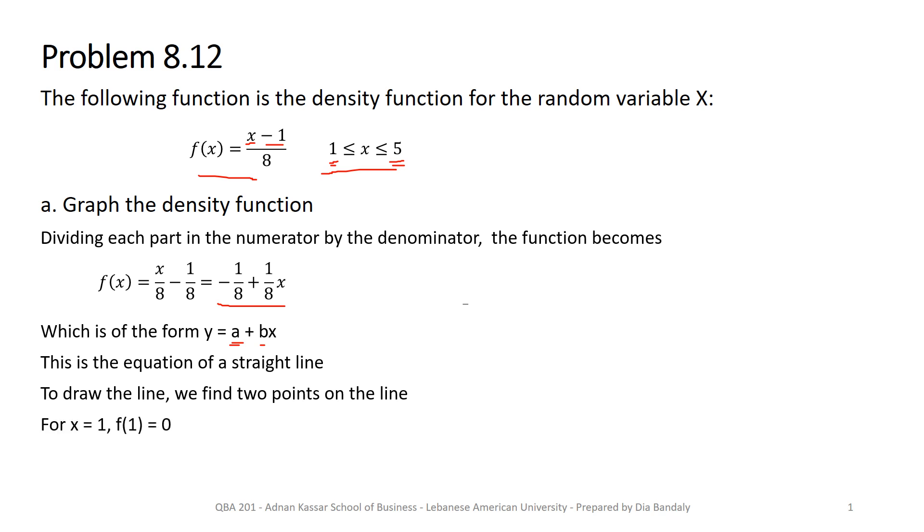So here we go. For x = 1, f(1), all that you have to do simply plug 1 here. It's either in the original function or in the restructured function that I did here. So that would be equal to 0, it's 1 minus 1, so that's 0. Then for x = 5, I will plug here 5 instead of x. So it's 5 minus 1, 4 over 8. So that's 4/8 that we get here.